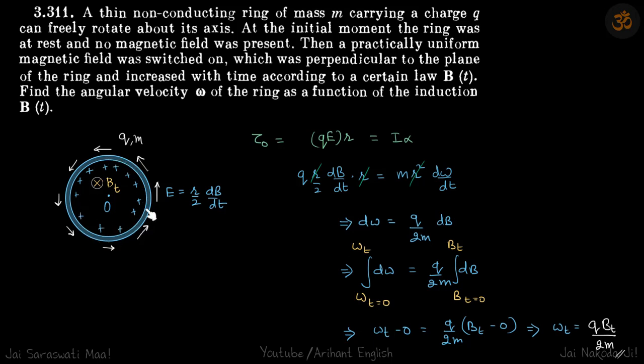In this question we have a uniformly charged ring with charge q and mass m, kept in a time-varying magnetic field B(t). We have to find the angular velocity ω as a function of time as a function of induction B.